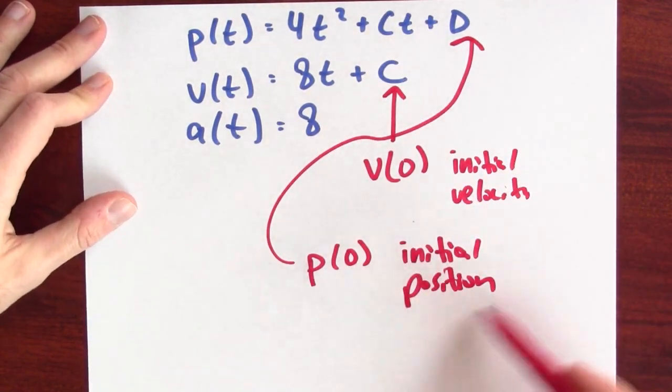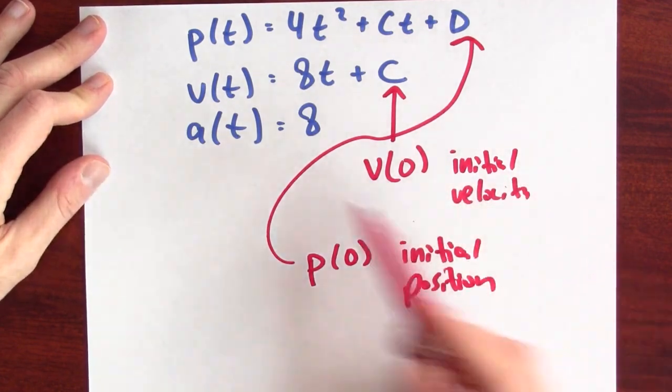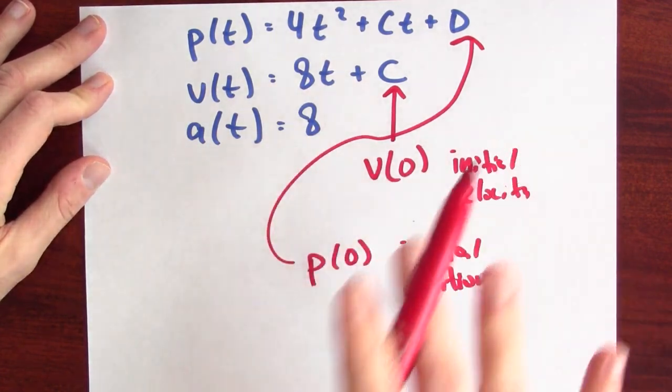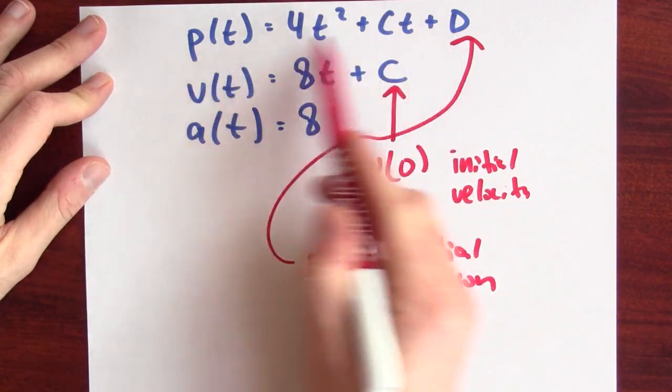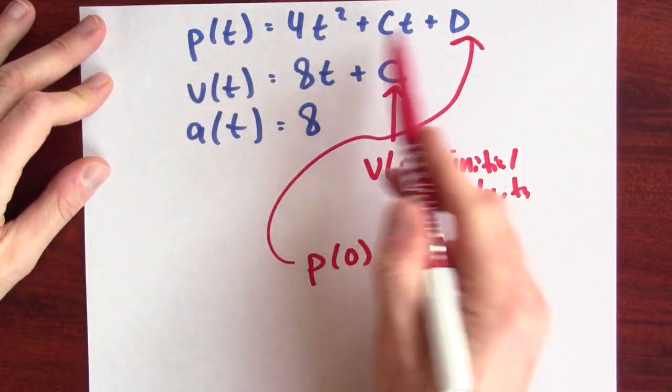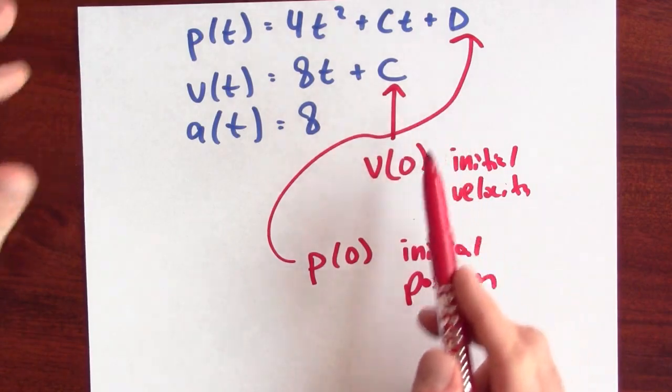So, if I know my initial position and my initial velocity and my acceleration, then I can nail down an exact formula for my position. I can get rid of these mystery constants. The important lesson to take away here is that anti-differentiating can actually be useful. Anti-differentiating lets us take velocity information and produce the position data. Or even better, in this case, it let us take acceleration information, figure out the velocity, and then take that velocity information to figure out my position.